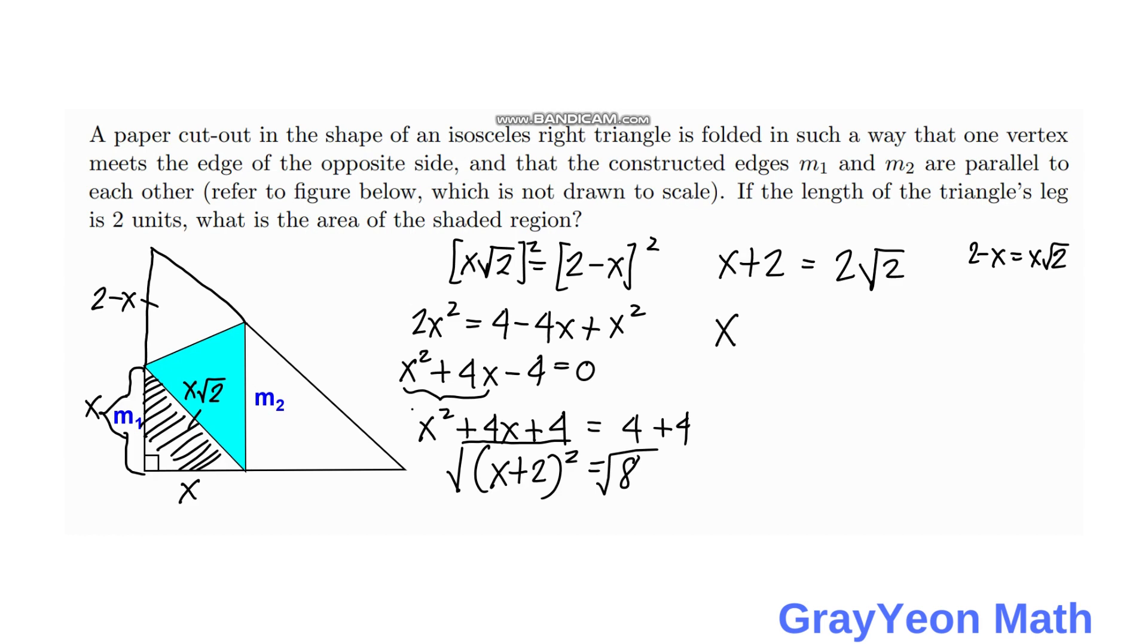Then we have x is equal to -2 plus or minus 2√2. But actually, we are only to get this positive value because there is no negative distance. So the only answer is x is equal to 2√2 minus 2.